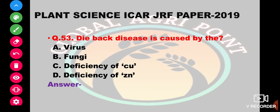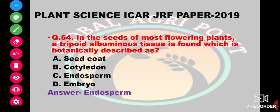Dieback disease is caused by virus, fungi, deficiency of copper, or deficiency of zinc. The answer is deficiency of copper. In the seed of most flowering plants, a triploid albuminous tissue is found which is botanically described as cotyledon, endosperm, or embryo. The answer is endosperm.